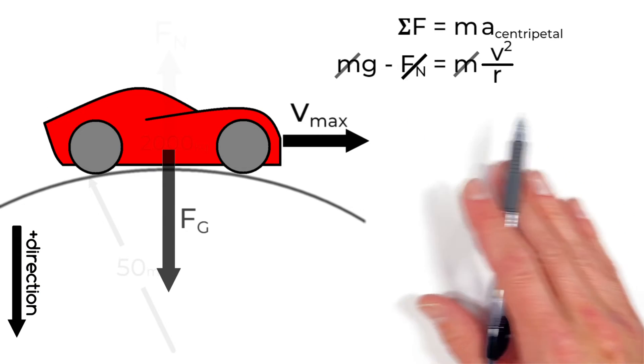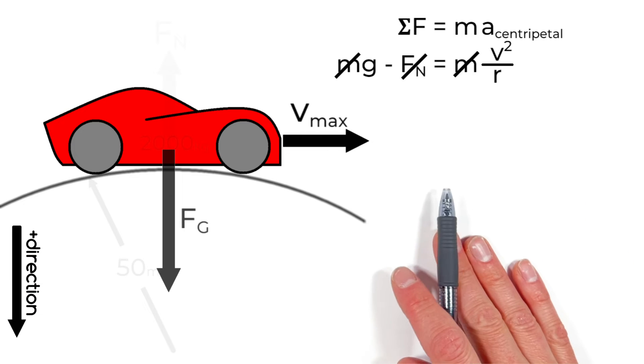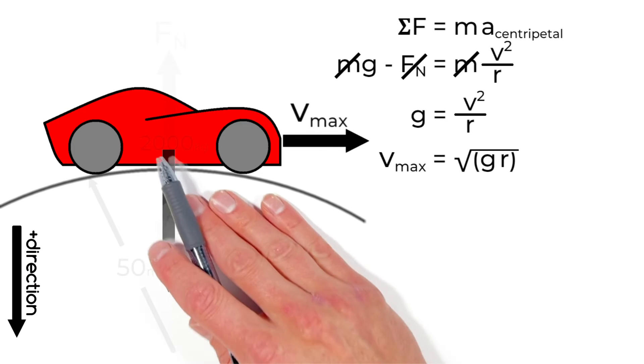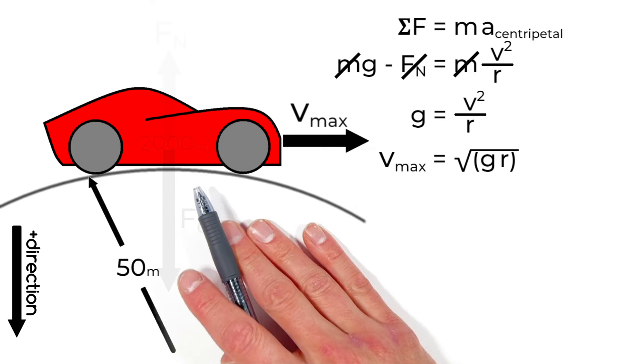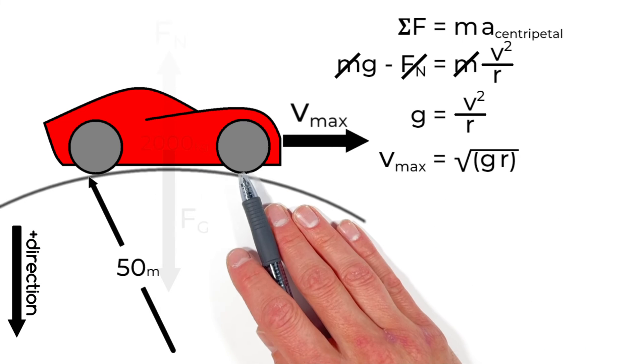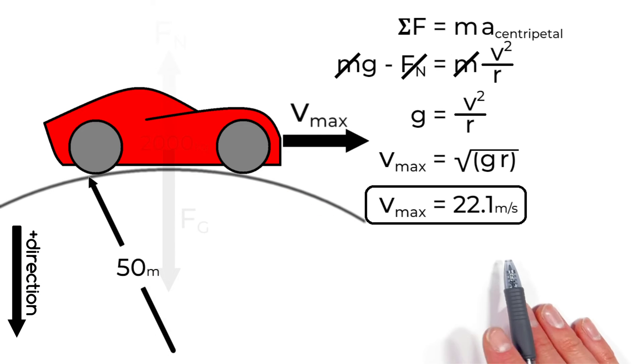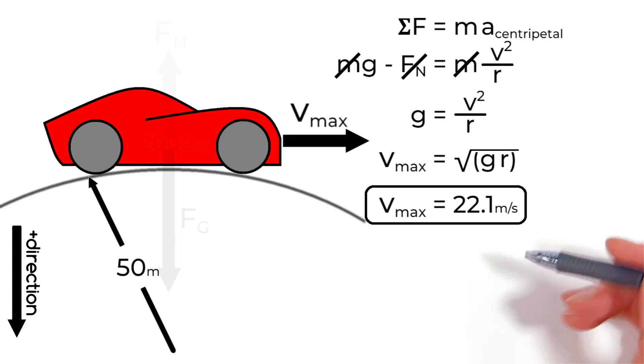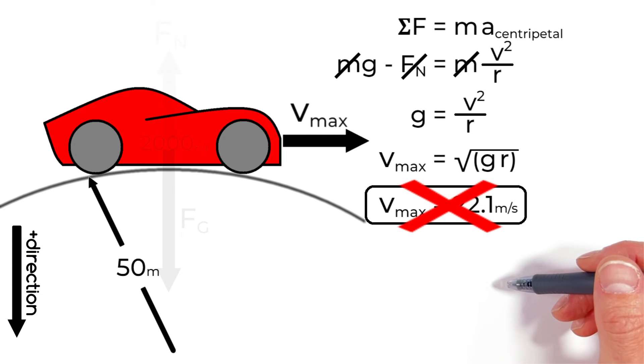You'll notice the m's cancel out we get v is equal to the square root of gr and subbing in the numbers from this problem we find the fastest this car can go over the top of the hill is 22.1 meters per second. But like I said this is a stupid problem and let me explain why.